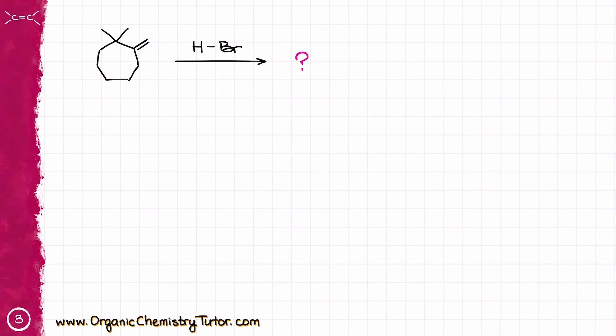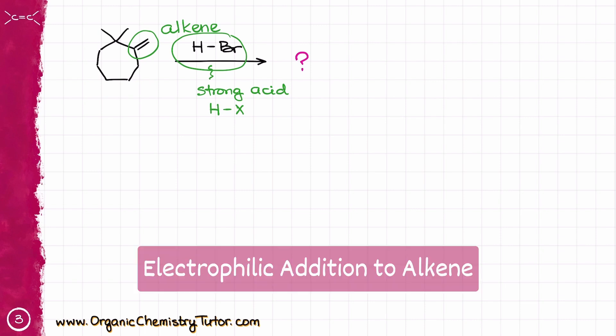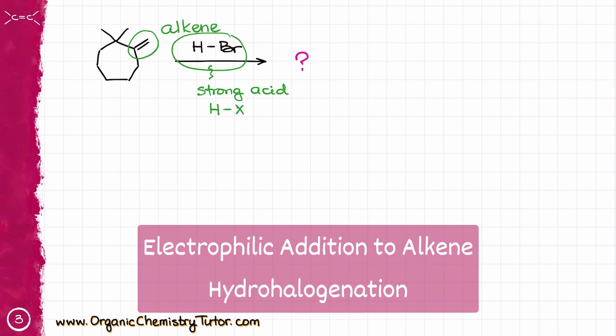What I have on the left is an alkene, while for my reagent I have HBr over here, which is going to be a strong acid. This is a type of strong acid which we normally abbreviate as HX. The most likely reaction we're going to be seeing here is the electrophilic addition to our alkene, namely that's going to be hydrohalogenation of some sort.